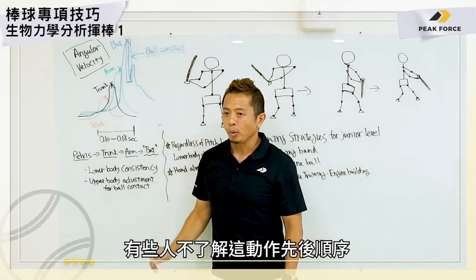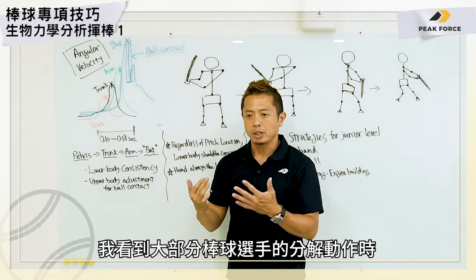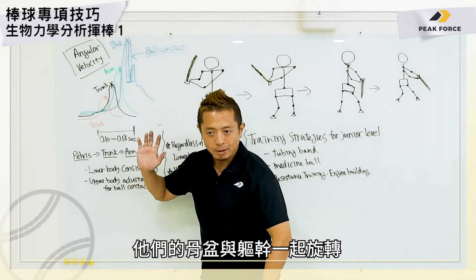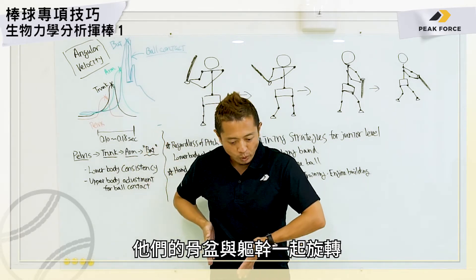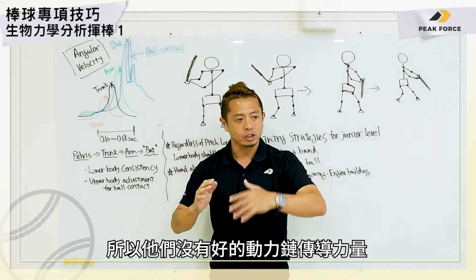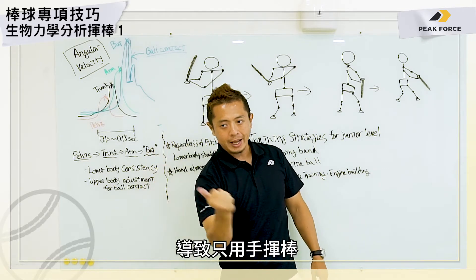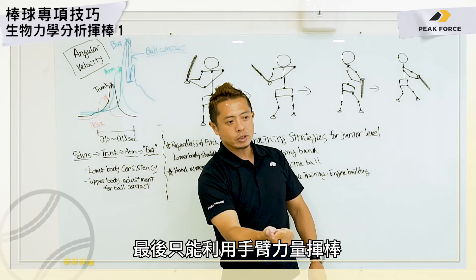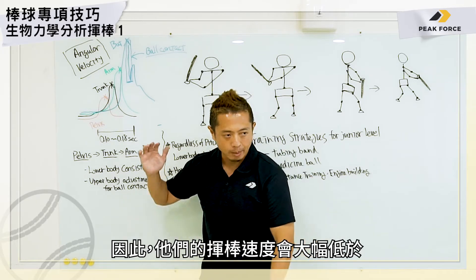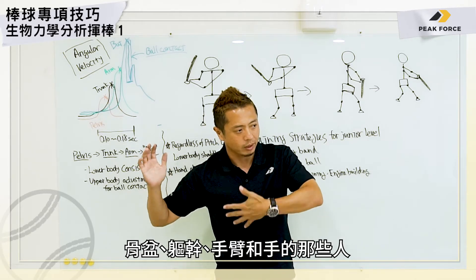Some people don't have this sequence. A lot of times in swing analysis I see baseball players moving the pelvis and trunk together, so they don't have a good kinetic chain to transfer the energy. They end up just using the hands to swing. As a result, their bat swing speed is much lower than somebody who uses the full sequence from pelvis, trunk, arm to hand.